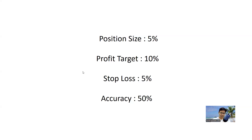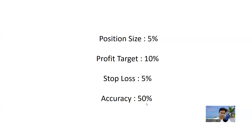So if these are your parameters, then how many trades will it take to generate a 50% return on your portfolio in one year? If your position size is 5%, your profit target is 10%, your stop loss is 5%, and your accuracy is 50%, how many trades will you have to take in a year to generate a 50% return on your portfolio? That will take some mathematics, which I will simplify for you now.